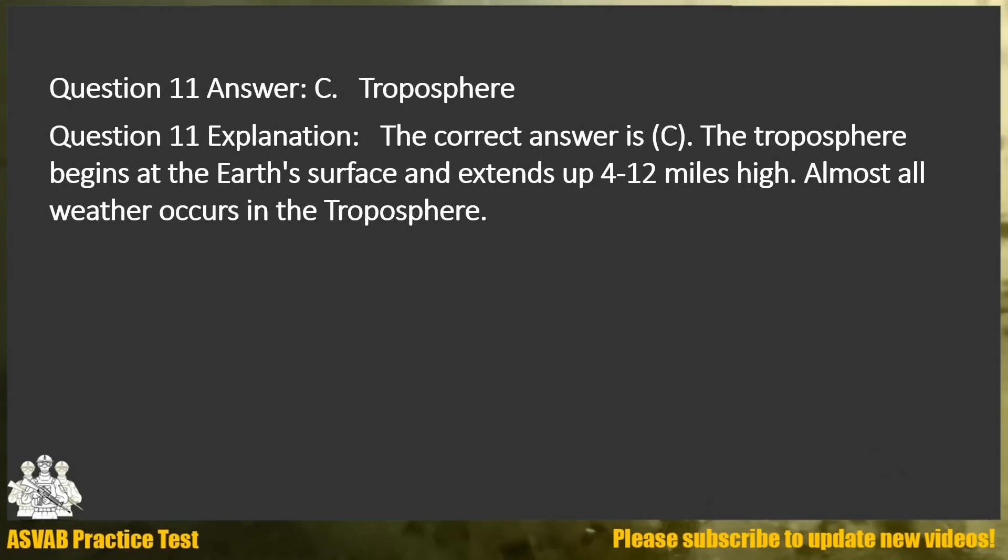Answer: C. Troposphere. Explanation: The correct answer is C. The troposphere begins at the Earth's surface and extends up for 12 miles high. Almost all weather occurs in the troposphere.